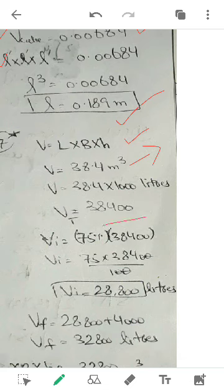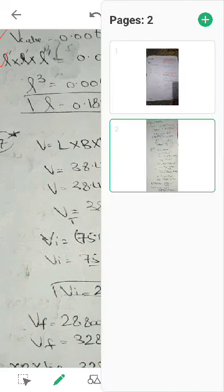Then I have converted this into liters. One meter cube was equal to how many liters? 1000 liters. So for changing meter cube to liters, I will multiply the value by 1000. We have seen it in the last lecture. So there it is. The total volume of the tank in liters is 38,400. This value.